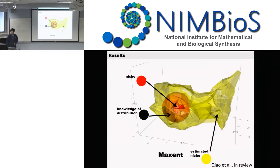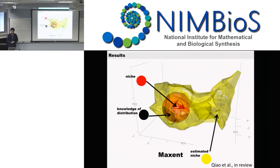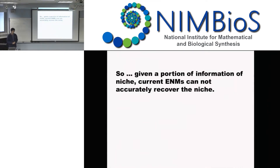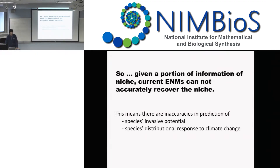Then the next extreme example: the darker area is the portion we use to train the model, and the yellow area is the estimated niche by MaxEnt. We are using the minimum training presence threshold because we know the whole distribution, so we have good reason to use that threshold. The conclusion is: given a small portion of niche information, current regression-based or machine learning-based algorithms will have difficulty estimating the fundamental niche. This means all applications predicting species potential distribution or species distribution response to climate change have uncertainties associated with that transfer.